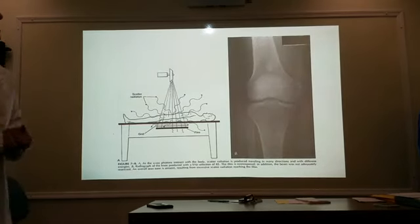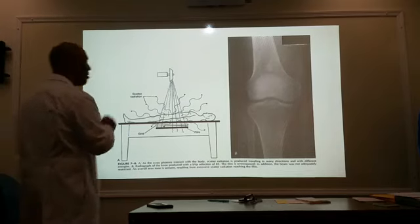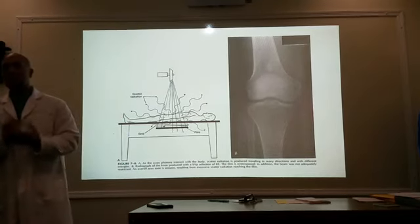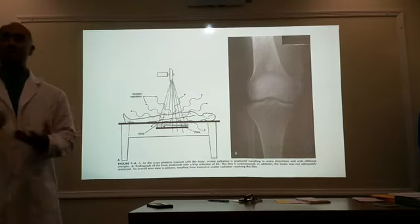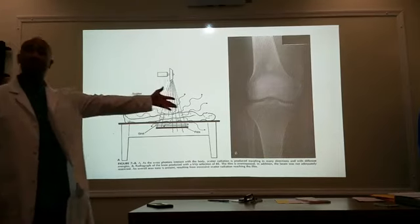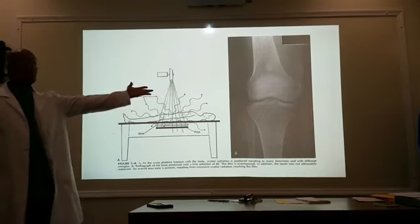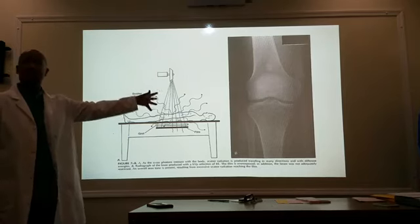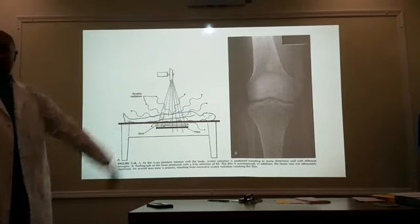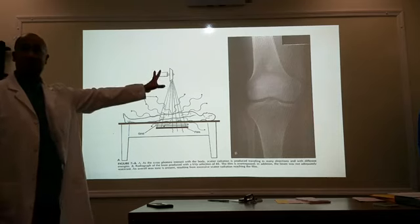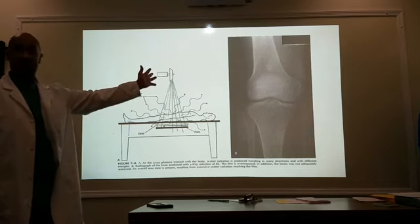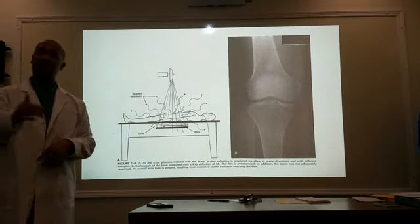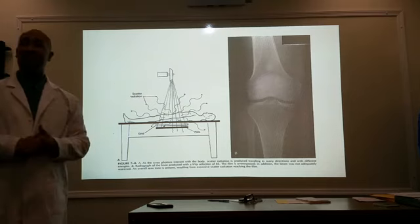Here's an example of a knee x-ray. It's a bone, right? What color is bone supposed to be? White. It's supposed to be white. Does it look white to you? It's gray. This is what's caused the unwanted density from scattered radiation. It should be nice, black and white, but it's very, very gray. That's what scattered radiation does — it causes unwanted densities or fog.